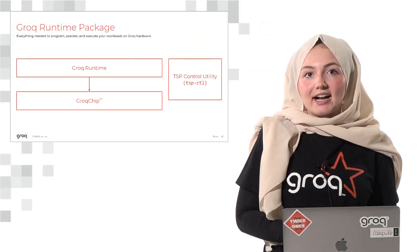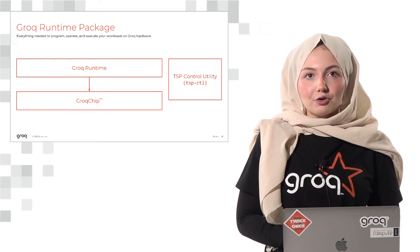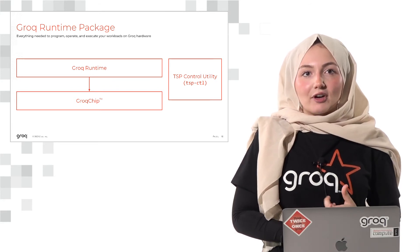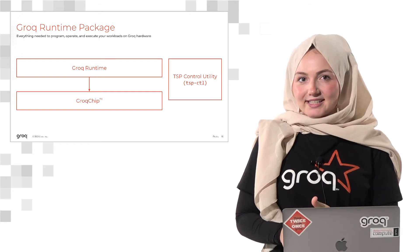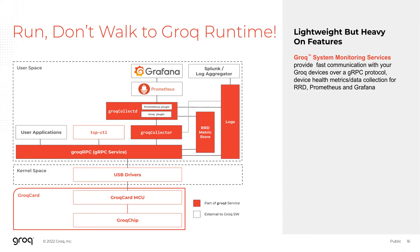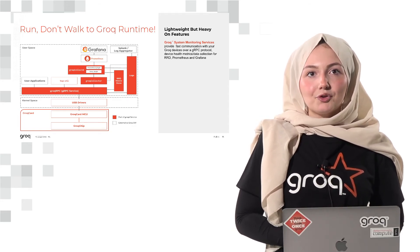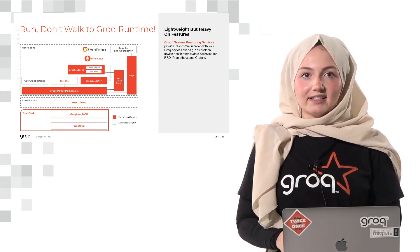Moving on, our second package — the Grok runtime package — contains everything needed to program, operate, and execute your workloads on Grok hardware. It contains the Grok runtime and TSP control utility. The Grok runtime is our lightweight, open source runtime for the actual execution of your programs on Grok chip. It includes Grok system monitoring services, runtime APIs, and real-scale chip-to-chip interconnect technology. The Grok system monitoring services is for monitoring Grok chip health metrics and provides an interface to communicate with your Grok devices over a gRPC protocol, data collection, and integration of the collected data with tools our users love, such as round-robin database, Prometheus, and Grafana.